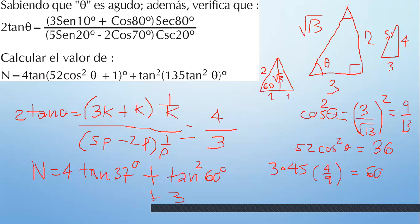37 es el menor del clásico 5, 4, 3. Se le pone 3. Tangente de 37 es 3 cuartos. 3 cuartos por 4 es 3. 3 más 3 es 6. Sale 6.